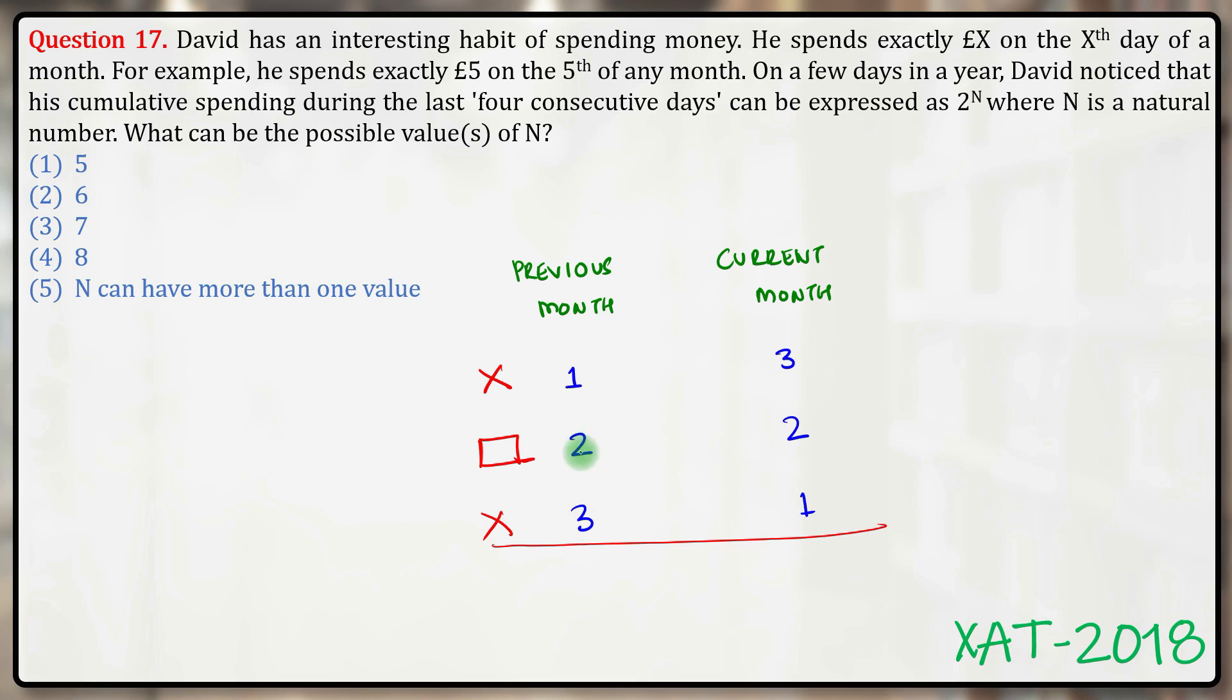At this point, we can adopt one of two approaches. Either we can list down all the cases with two dates from the previous month and two dates from the current month, or we can do something to get our answer very fast. I will first exhaustively list all the cases and then tell you the faster method. So it can either be